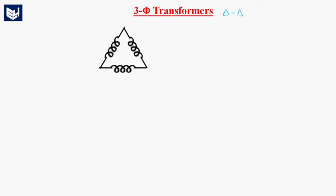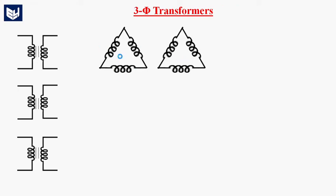This is the delta connection in which the three windings of the transformer are connected. This is the primary winding and this one is the secondary winding. Consider this is the first winding, this is the second winding, and this is the third. One end is connected to the immediate end, and the next immediate end is connected to the next, and the first and last ends are connected. The three-phase transformer is like this.